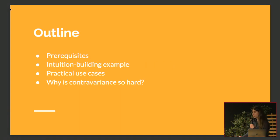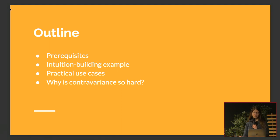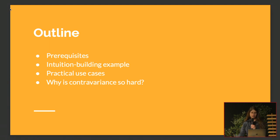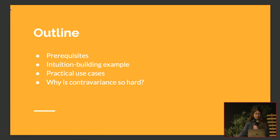The outline is the following: we'll quickly go through some prerequisites, then an intuition-building example using the stereotypical subtyping example with an animal type and some concrete subtypes. The idea is to give you something easy to memorize so that if you need to remember when to use covariance versus contravariance, you can work it out just using logic. We'll then look at practical use cases and end by asking why contravariance seems so difficult.